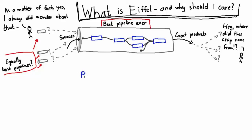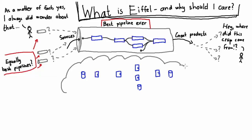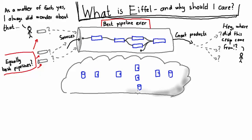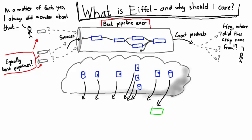This is where the Eiffel protocol for continuous integration and delivery comes in. At its heart, Eiffel takes a different perspective on continuous integration and delivery pipelines. Rather than thinking of those pipelines as a set of job configurations in a CI server somewhere, let's think of them as cloud applications in their own right — cloud applications where each of those activities and each of the interacting tools that make it up are communicating microservices. In Eiffel, every action taken in continuous integration and delivery is an event.